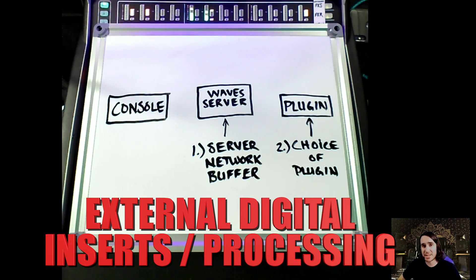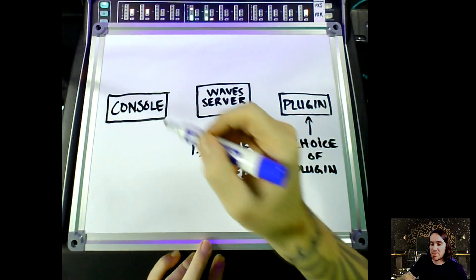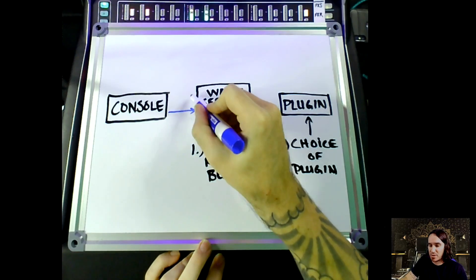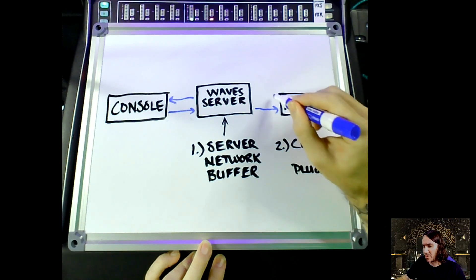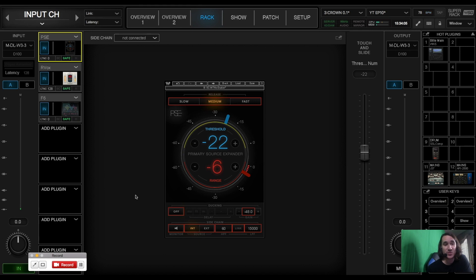Regarding external digital processing, inserting something like Waves can cause latency in two ways. The first is via the server network buffer — the speed at which audio travels from the console to the external server and back. The second is the choice of plugin, as not all plugins are created equal. In Super Rack, Waves makes it easy to see where latency is being added: you can see the total latency on the entire rack and, in the bottom left corner of each rack, how much latency each plugin induces.